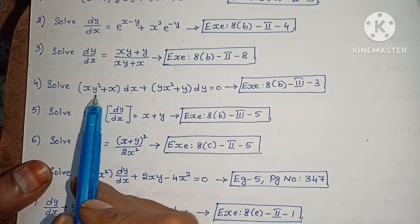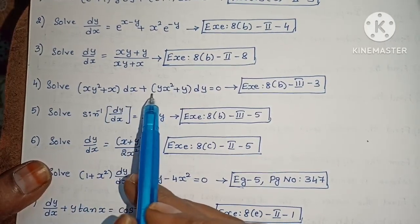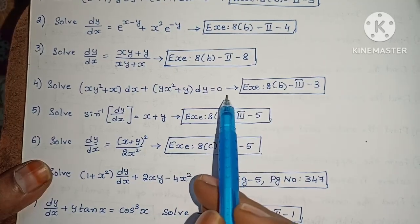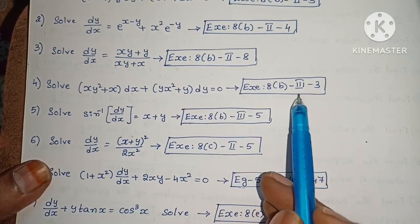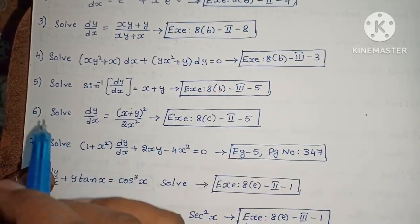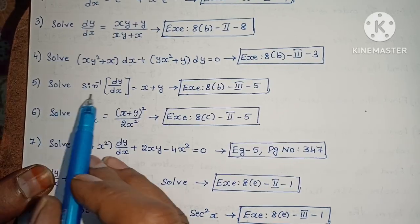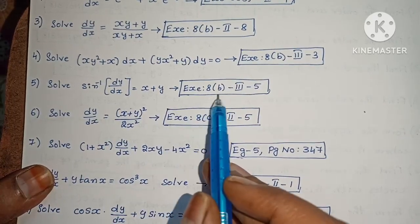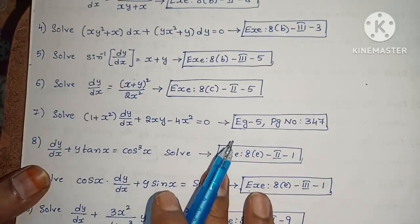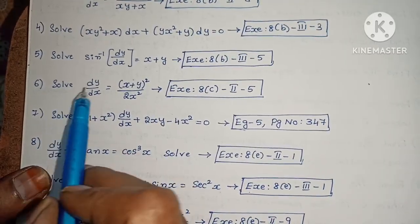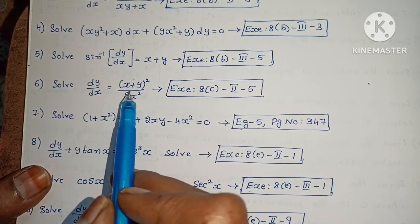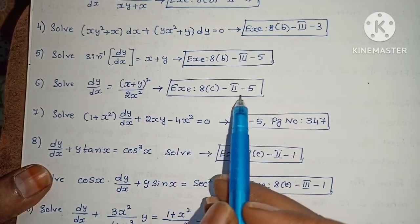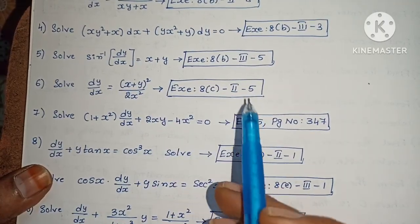Next, solve (xy² + x)·dx plus (yx² + y)·dy equals 0. Next, solve dy/dx equals x plus y. Next, solve dy/dx equals (x plus y)²/(2x²).